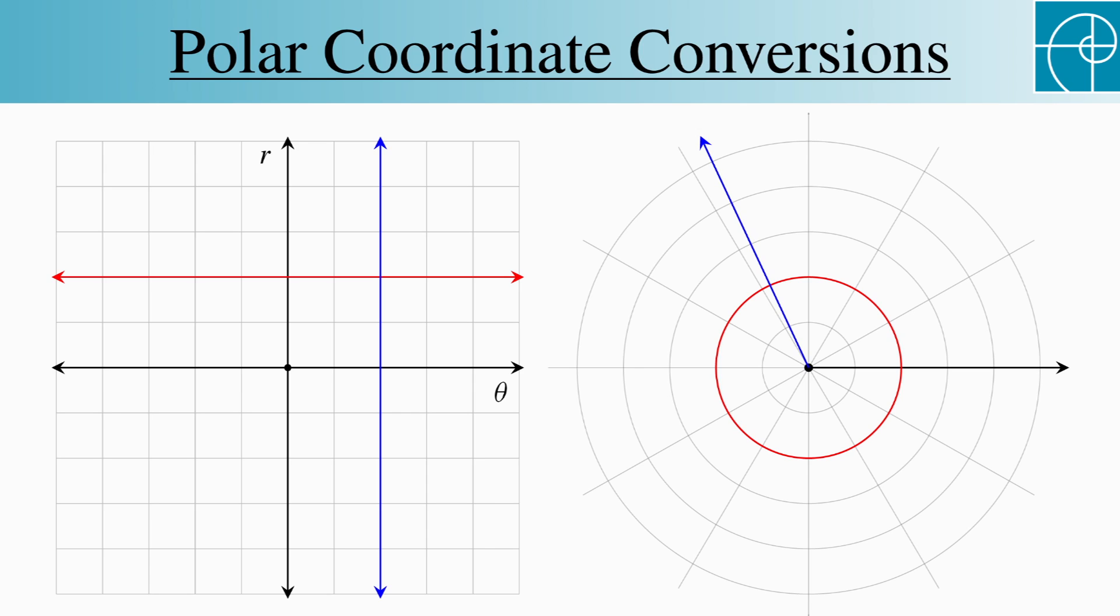If we want to be precise, then we actually get a line in polar coordinates since r can be positive or negative. We use this idea when we sketch the graph of sine in rectangular coordinates to help us graph r equals sine theta in polar coordinates.